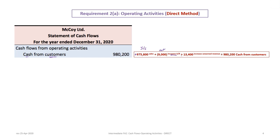We also add the increase in unearned revenues. Unearned revenues increasing is an increase in cash — it's a liability, and when liabilities go up, cash goes up as well. That gives us total cash received from customers of $980,200. Three accounts are related to customers: sales from the income statement, accounts receivable from the balance sheet, and unearned revenues from the balance sheet.